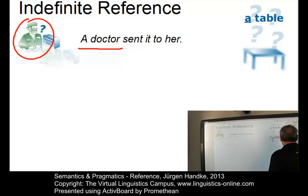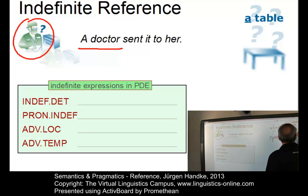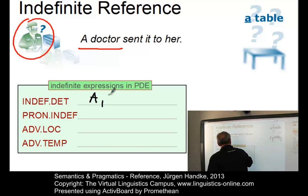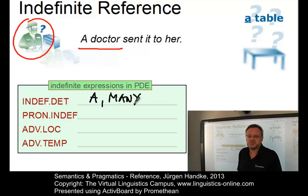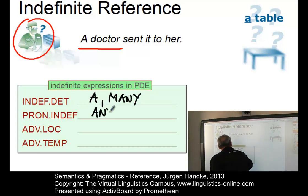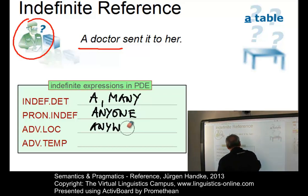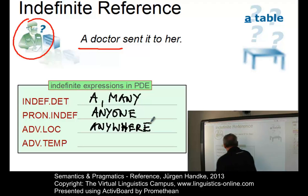Indefiniteness is signaled by the following elements in present-day English: indefinite determinants such as 'a' or 'many,' indefinite pronouns such as 'anyone,' locative adverbs such as 'anywhere,' and temporal adverbs such as 'sometime.'